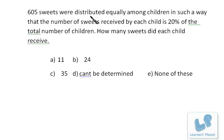Here, 605 sweets were distributed equally among children in such a way that the number of sweets received by each child is 20% of the total number of children. How many sweets did each child receive?